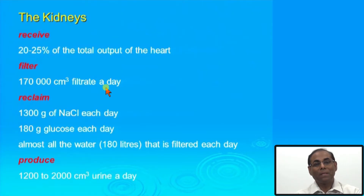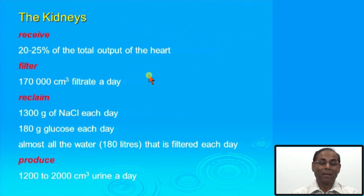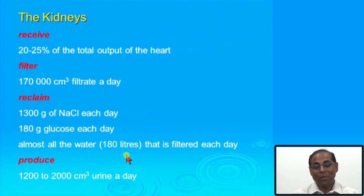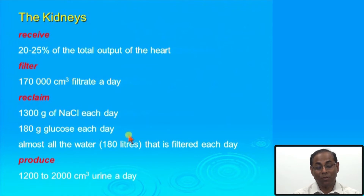The kidney receives almost 20 to 25 percent of the total cardiac output because it must perform filtration of the blood, filtering almost 170,000 cc of filtrate every day. It reabsorbs almost all the water — about 1 liter — and finally urine volume is only around 2 liters per day. During this process it reclaims all the sodium chloride salts as well as about 1 gram of glucose every day.